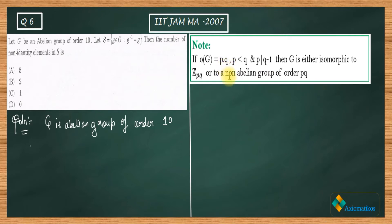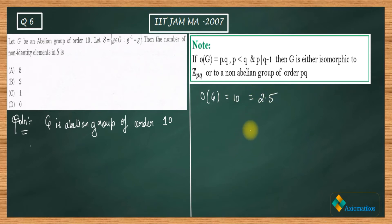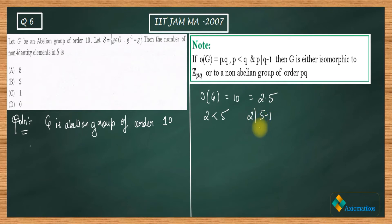In your question, group G has order 10. You can write 10 as a product of primes: 2·5. Now 2 is less than 5, and also 2 divides 5 minus 1 (which is 4). So all the hypotheses required for the note are already satisfied.